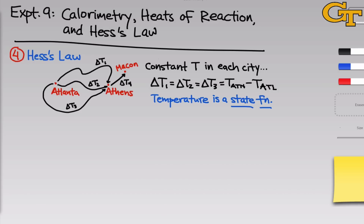Now imagine we added another city to the map — Macon — with a corresponding delta T from Athens to Macon of delta T4. We can ask: what's the overall temperature change going from Atlanta to Macon? If we knew delta T4 and didn't want to make the entire drive from Atlanta to Macon, we could still calculate the overall change in temperature by simply adding delta T1 and delta T4 — or equivalently delta T2 or delta T3, since all are equal to delta T1. This additivity of changes in state functions is extremely useful when dealing with enthalpies.